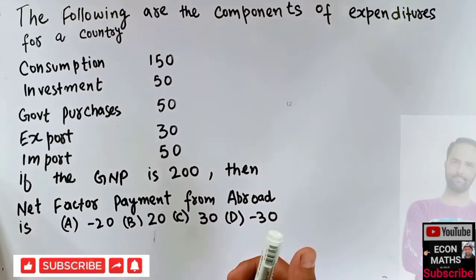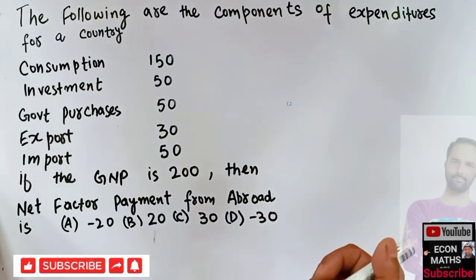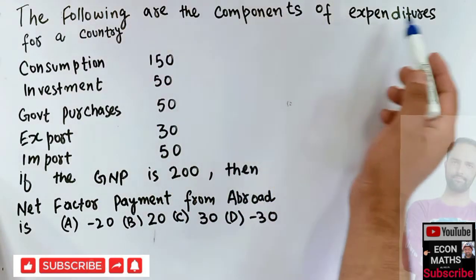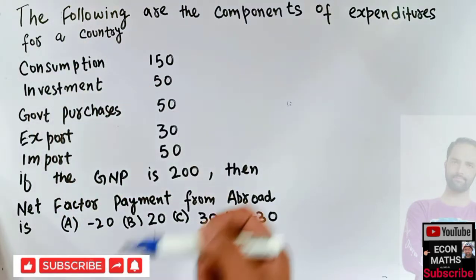In this video we will learn how to find the net factor payment from abroad from the given expenditures of an economy. The question is: the following are the components of expenditures for an economy.